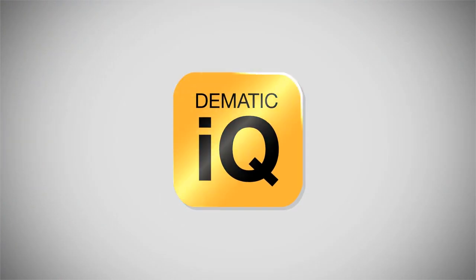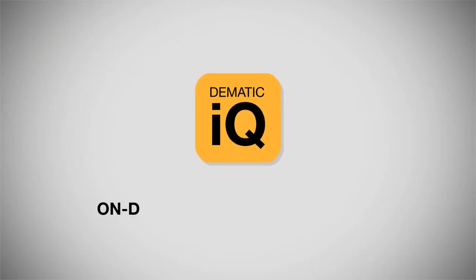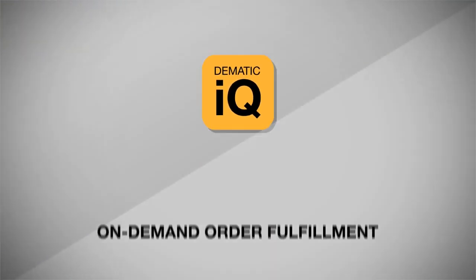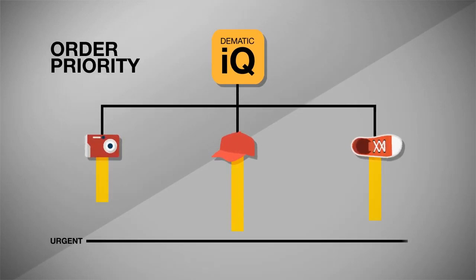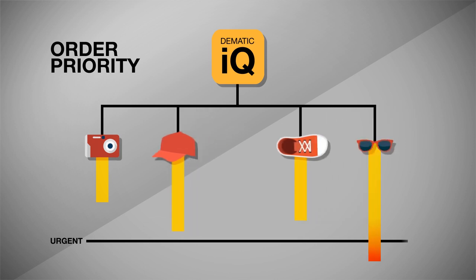And thanks to Domatic IQ Optimize, the software that powers on-demand order fulfillment, it's easy to fill urgent and priority orders without the manual expediting often needed with wave planning and multi-stage sortation systems.